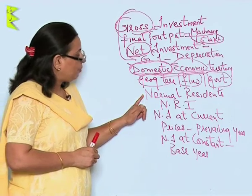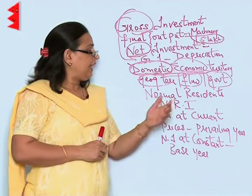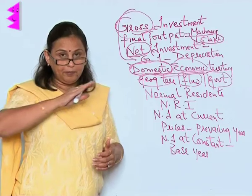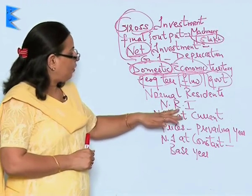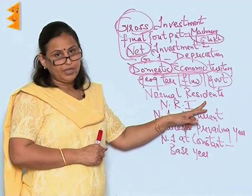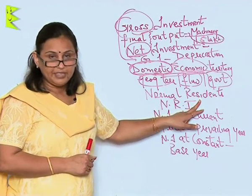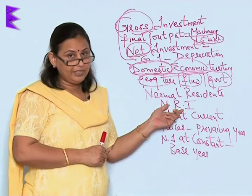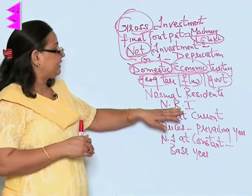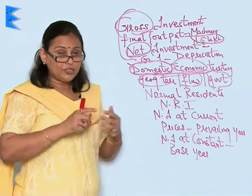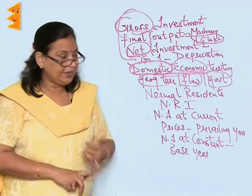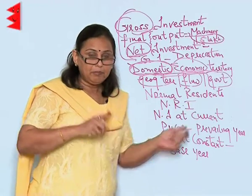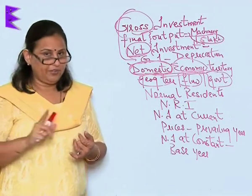Normal residents are those residents who have been staying in a country over a period of time and have their economic interest in that country. Even a foreigner can be a normal resident. Even NRIs — non-resident Indians — if they have their economic interest here, are normal residents. However, a student or a patient staying for a long period in a country is not a normal resident, because their economic interest lies in their home country.